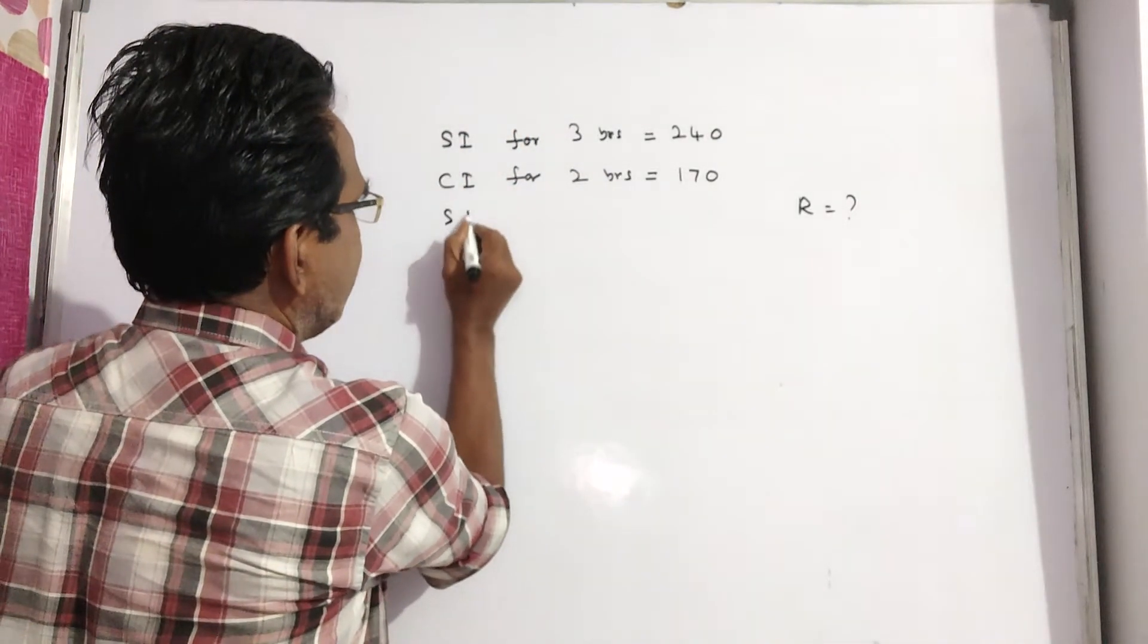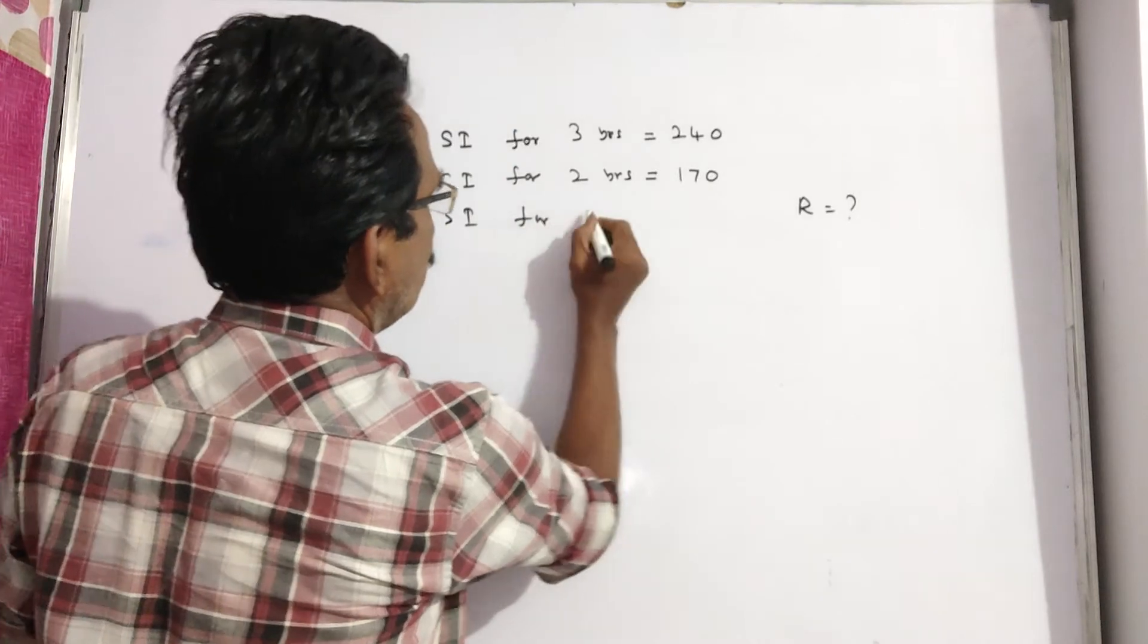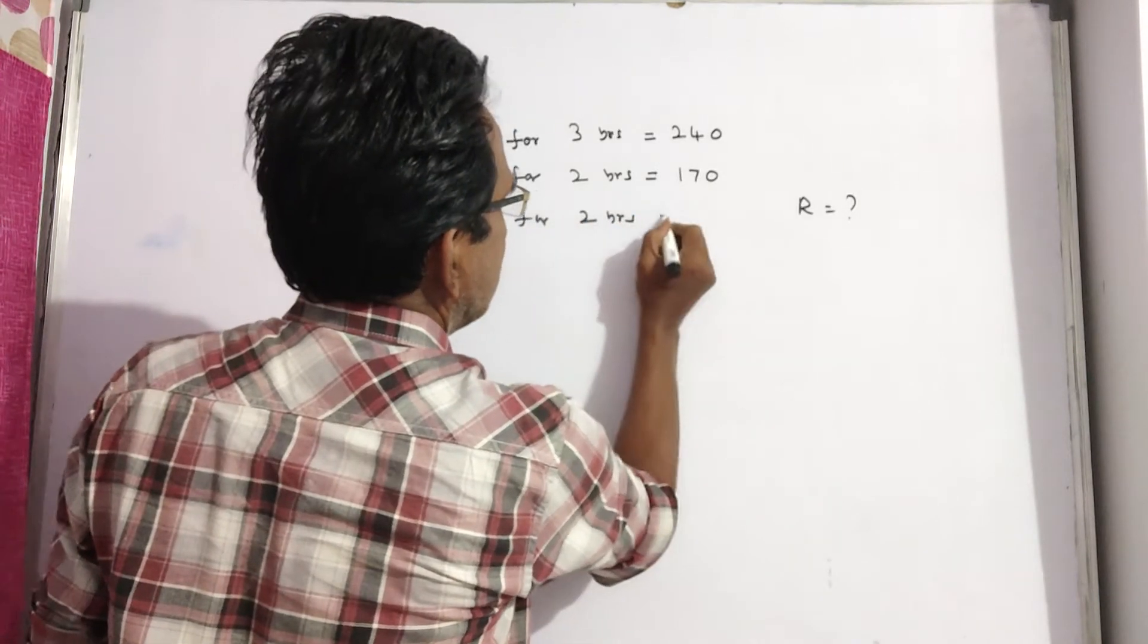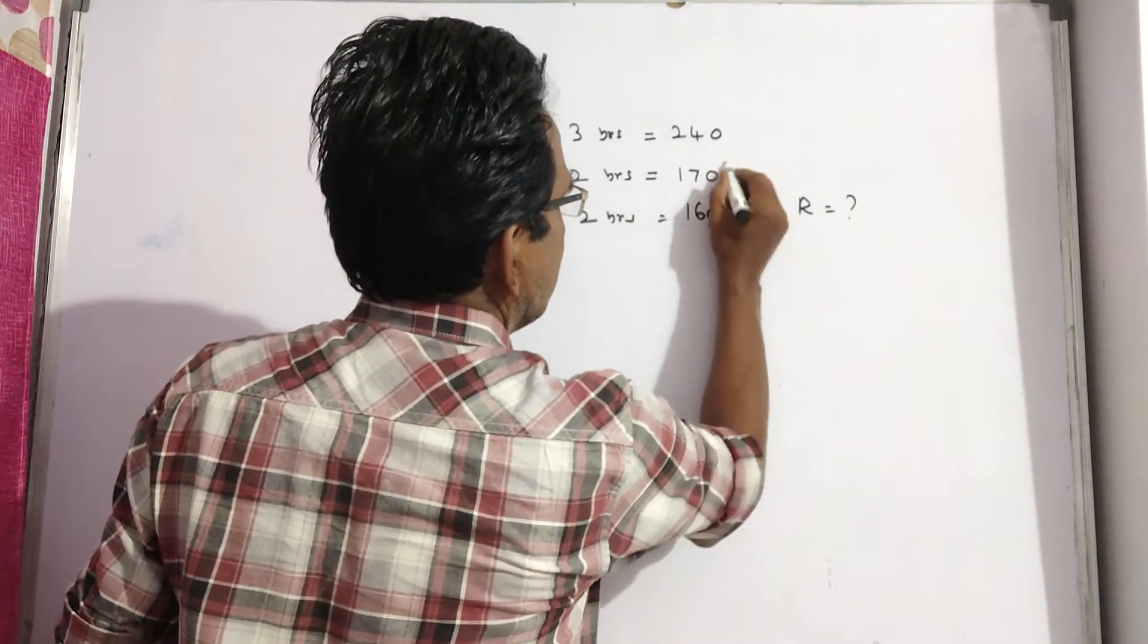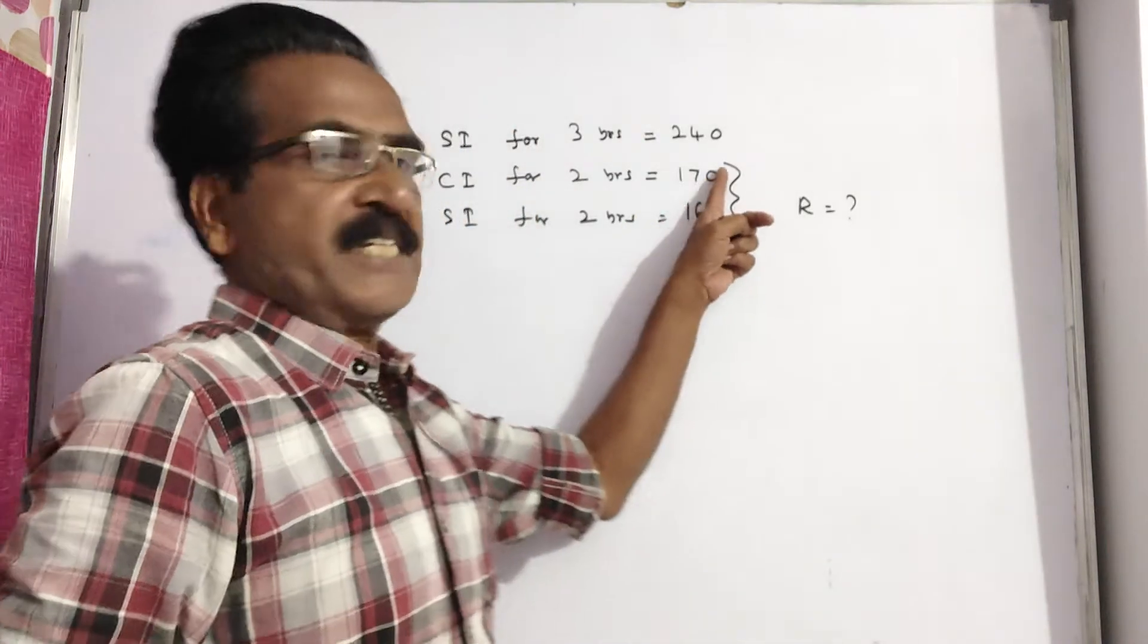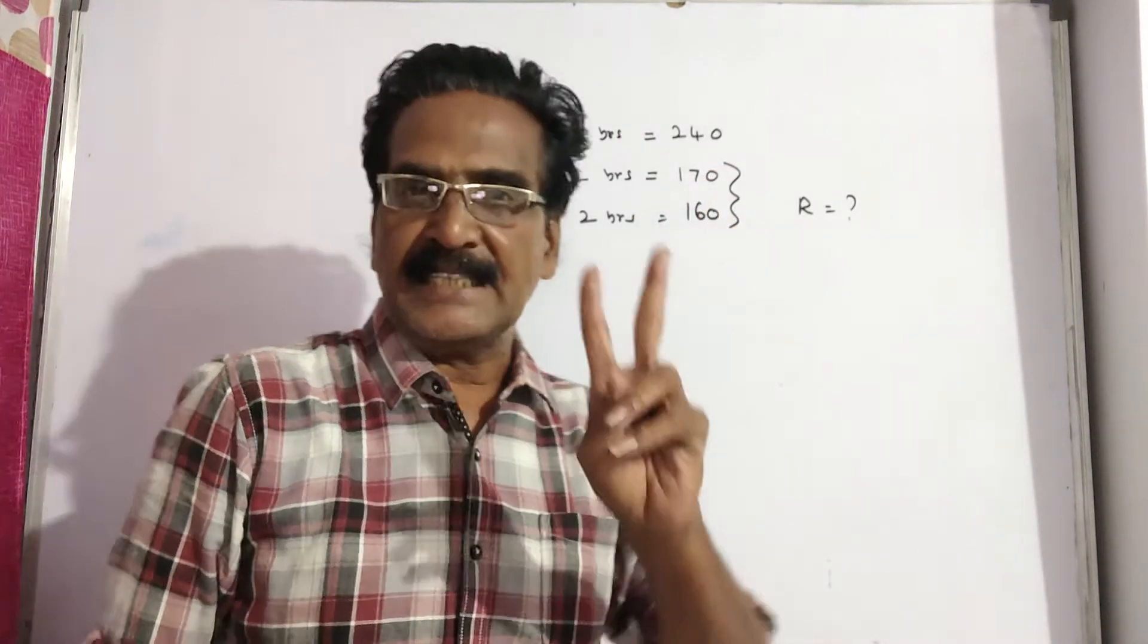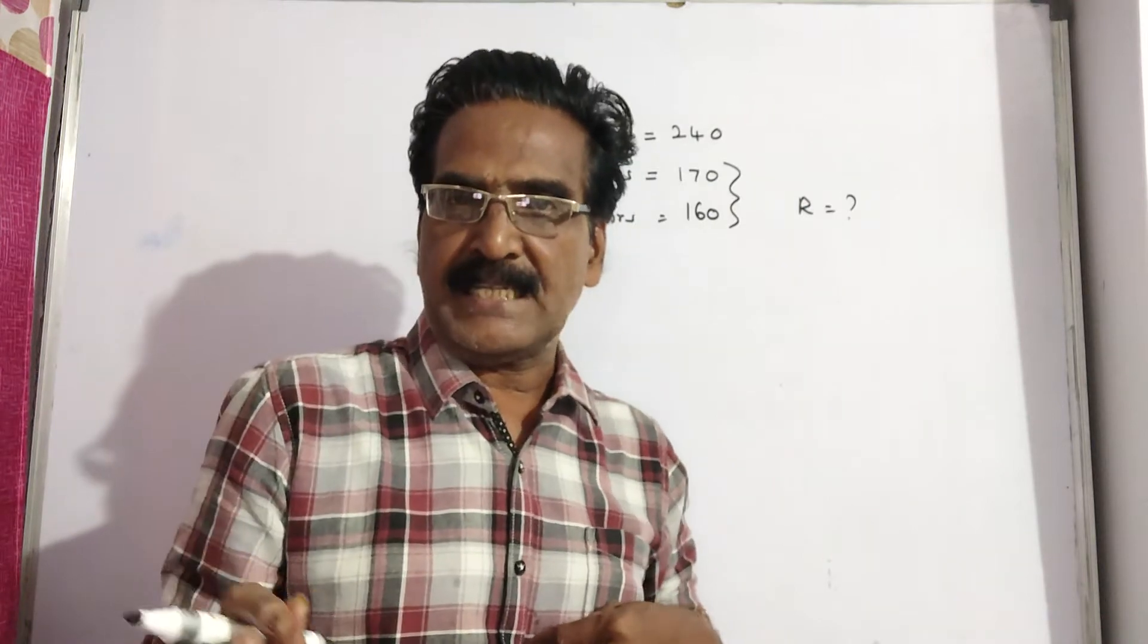So SI for 2 years is 160. Now we know CI, we know SI, and the time period is 2 years. If the time period is 2 years,